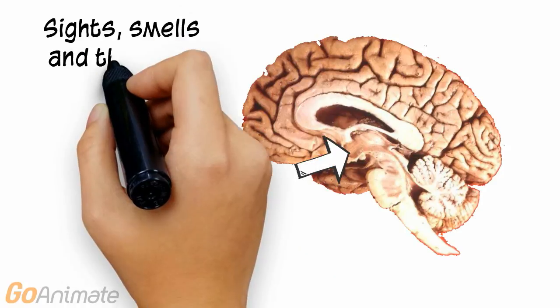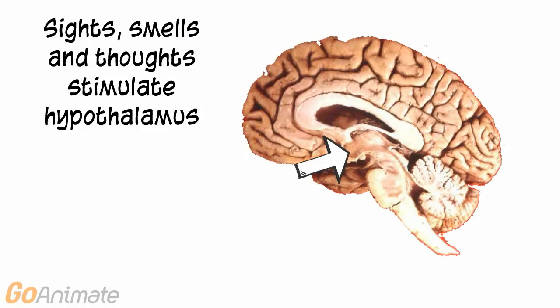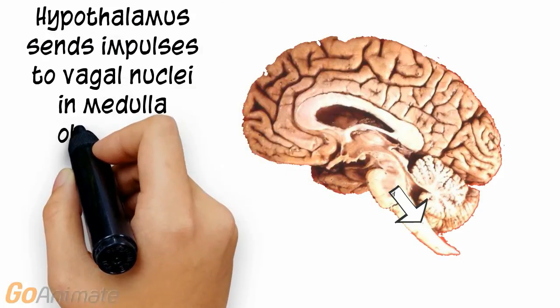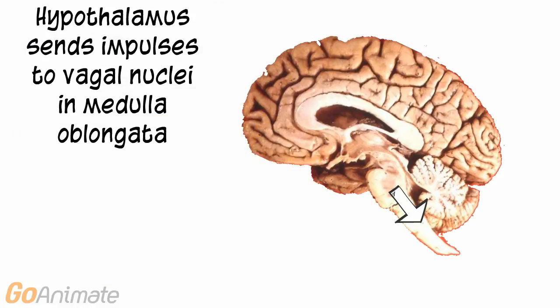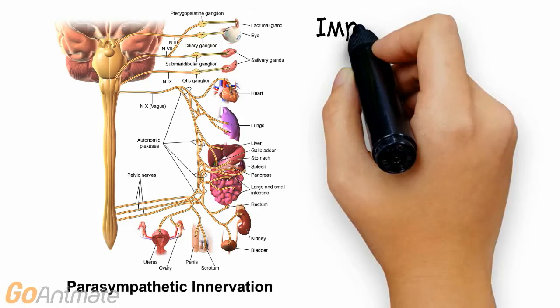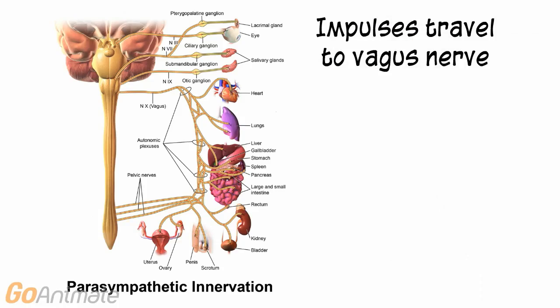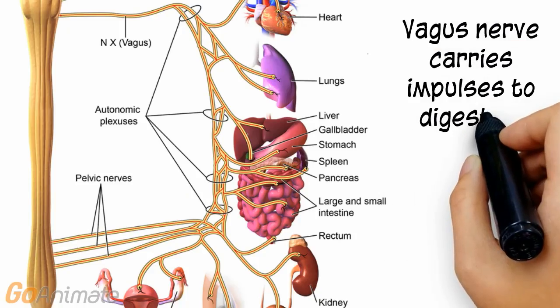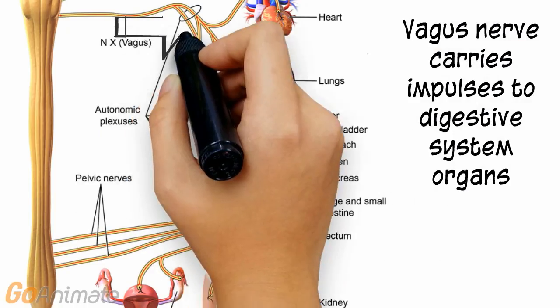These stimuli activate the hypothalamus, which in turn sends impulses to the vagal nuclei in the medulla oblongata. The vagus nerve then stimulates the digestive organs to get ready for digesting food.